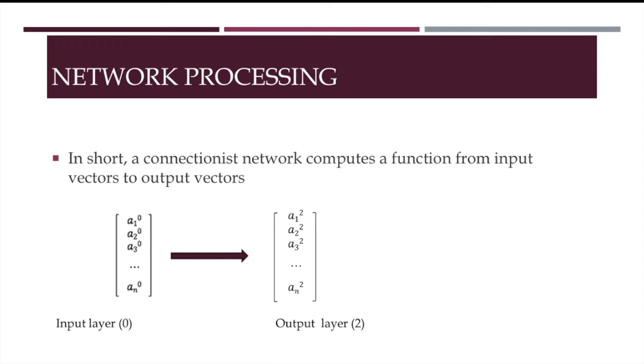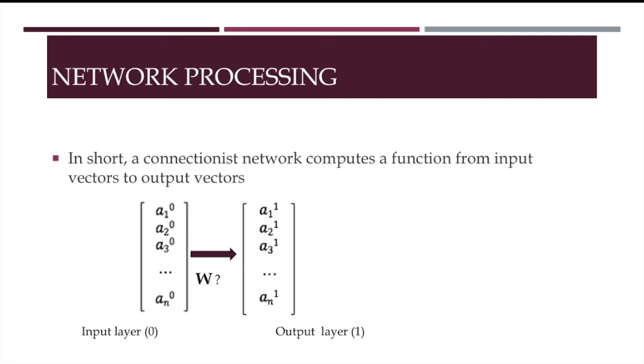In short, a connectionist network computes a function from input vectors to output vectors. The input vector might be an encoding of a particular question or an object that must be recognized or a stock whose future you want to predict. The output is the answer to the question or the category into which the object is classified or the future value of the stock.